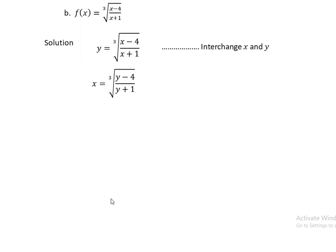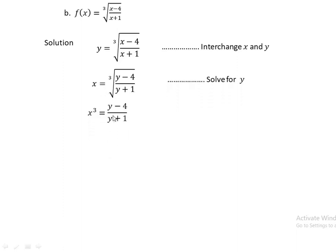Since the cube root is the same as raising to the power of 1/3, to remove the cube root we raise both sides to the power of 3. Therefore x³ = (y - 4)/(y + 1). Then multiplying both sides by (y + 1), we have x³(y + 1) = y - 4.